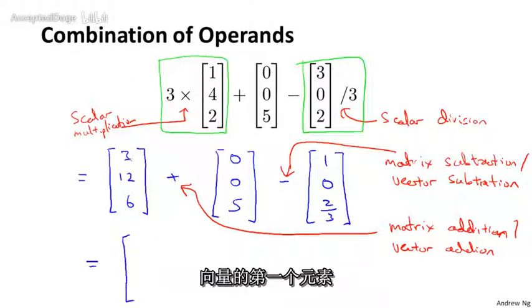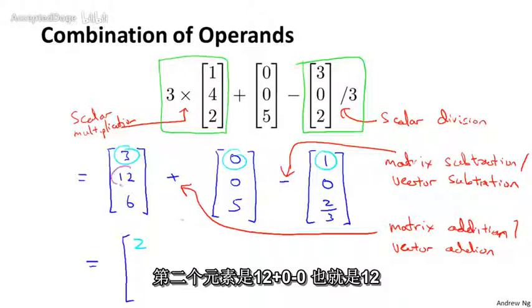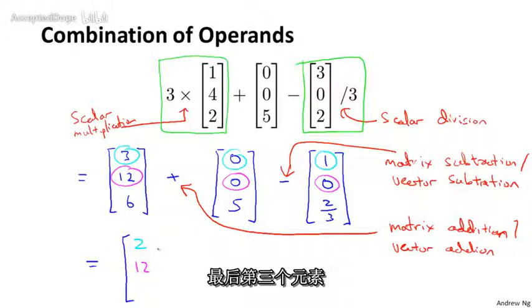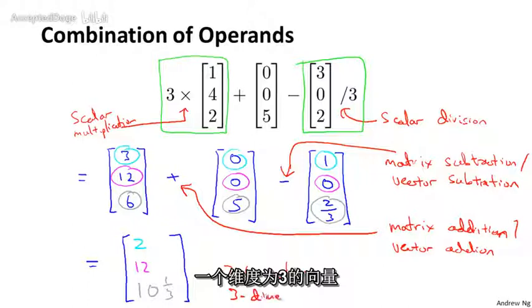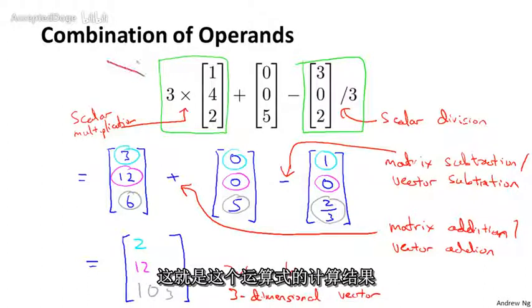This therefore gives me a vector whose first element is going to be 3 plus 0 minus 1, so that's 2. The second element is 12 plus 0 minus 0, which is 12. And the third element of this is 6 plus 5 minus 2 thirds, which is 11 minus 2 thirds, so that's 10 and 1 third. And so this gives me a 3 by 1 matrix, which is also just called a 3 dimensional vector, which is the outcome of this calculation over here.